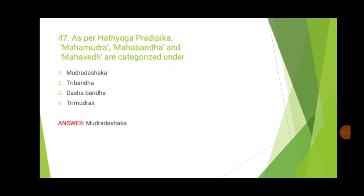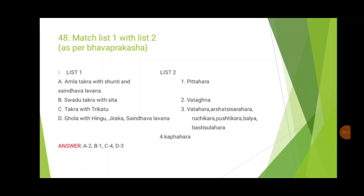As per Hatha Yoga Pradipika, maha mudra, maha bandha, and maha vedha are categorized under mudra dashaka. According to Bhavpragash, match amla takra with shundi and saindhavallavana. In treatment of vata roga, amla and lavana rasas are preferred — use that connection. Swadhu and sitha are mostly used in paithika conditions, and trikadu is mostly used in khabaja conditions; connecting these three helps match the fourth option.